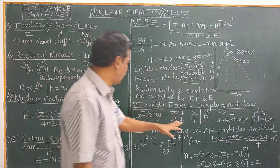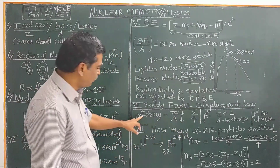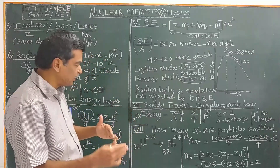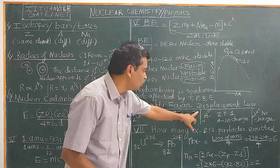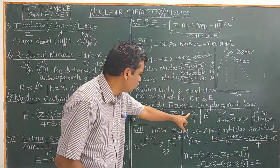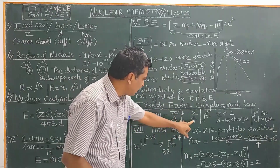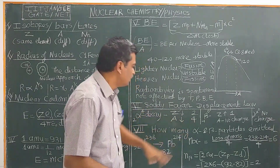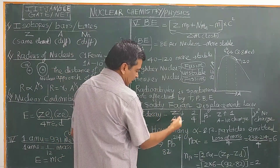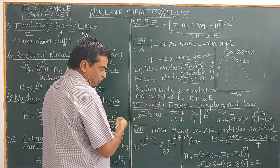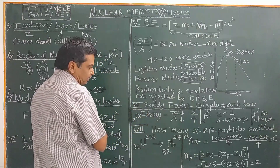The nuclear displacement law: when an alpha particle is emitted by the parent nuclei, the daughter nuclei will have an atomic number two less and a mass number decreased by four units. Therefore, the daughter element shifts two group positions to the left in the periodic table.